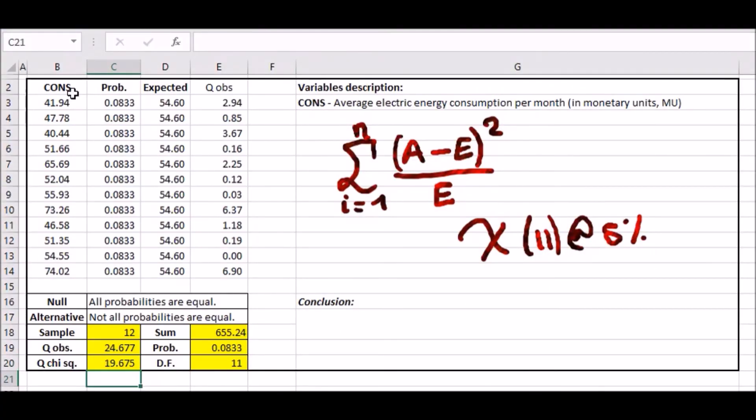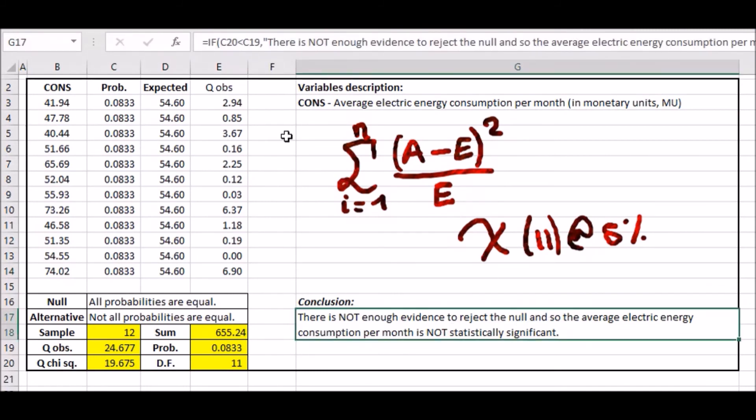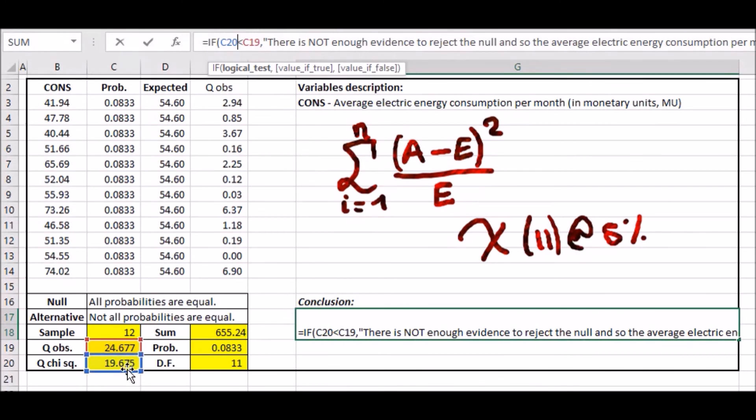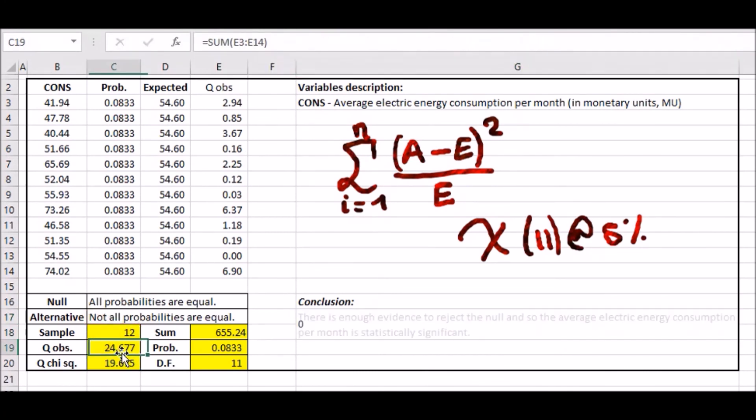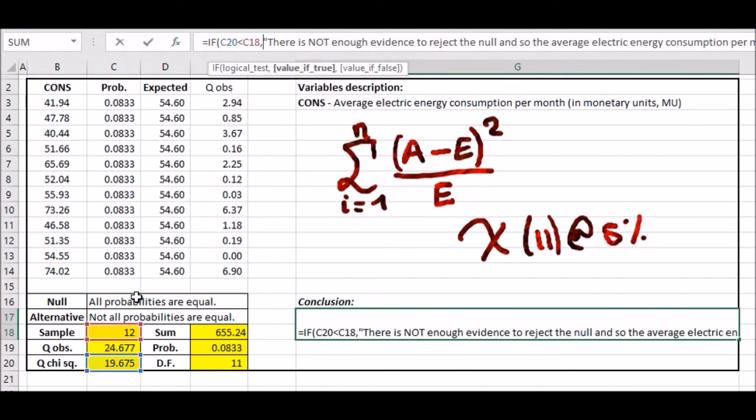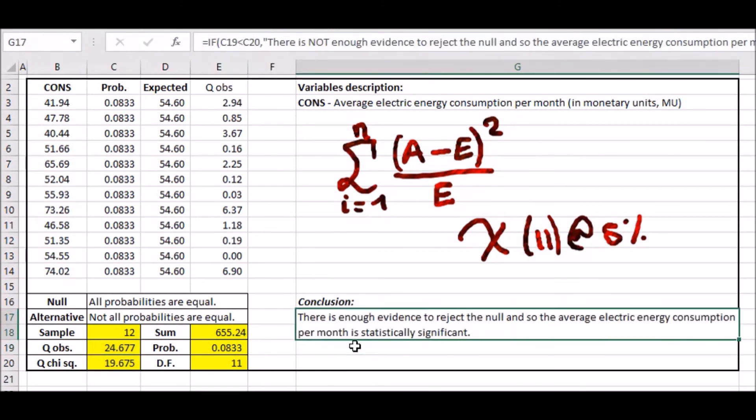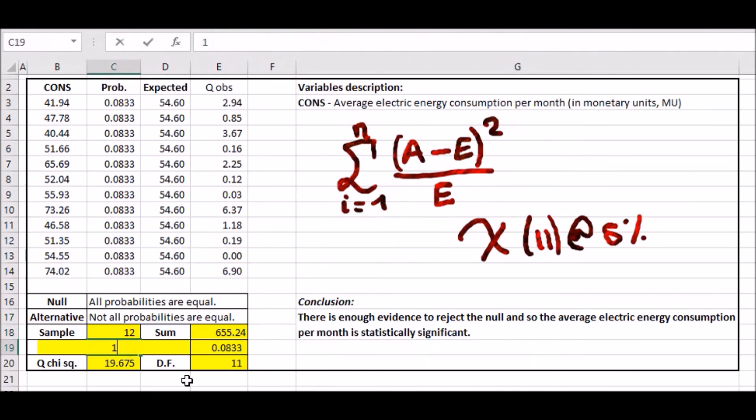You can see the observed is bigger, so your conclusion is there is not enough evidence to reject the null. Actually, let me flip the formula around. There is enough evidence to reject the null, and so the average electric energy consumption per month is statistically significant. If it was the other way around, suppose this was smaller, like 18, then our conclusion would be there is not enough evidence.